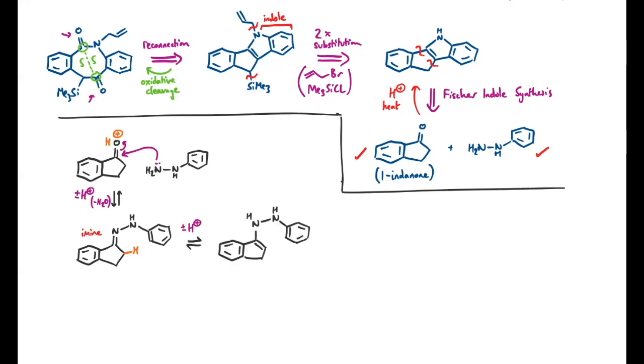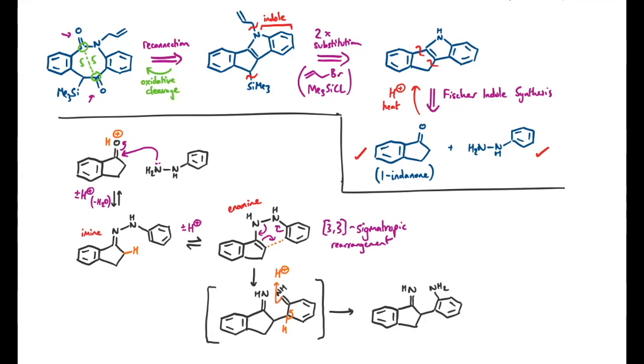And now we're set up for a sigmatropic rearrangement, specifically a 3,3 sigmatropic, where we can break the weak nitrogen-nitrogen sigma bond, which will quickly re-aromatize before anyone notices, to give this amine, which then can just cyclize under acidic conditions, to extend the aromaticity. So just swapping around a few protons, and losing an ammonia molecule overall. This gives me the product that I need in my synthesis.